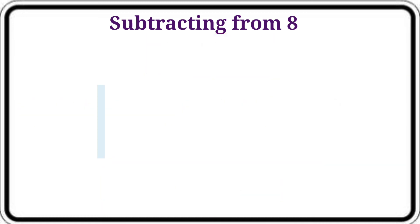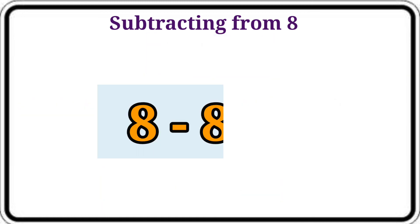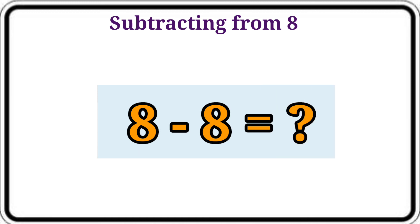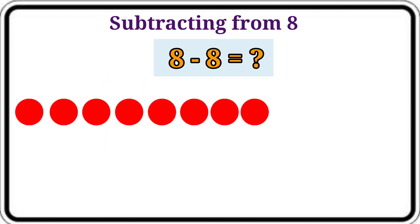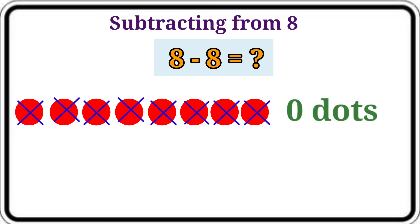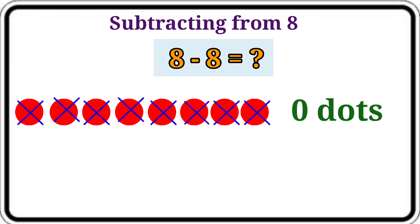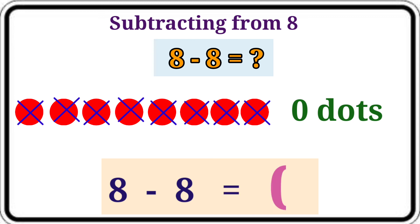Then to find the answer: 8 minus 8. Let's count the dots that are not crossed. Here no more not crossed dots. We know that no more means 0. Here 0 dots. The answer is 0. 8 minus 8 is equal to 0.